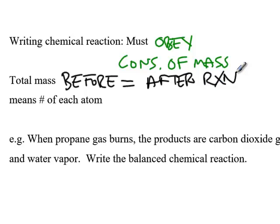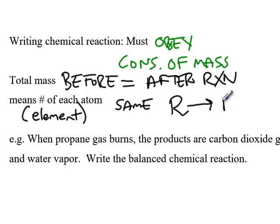And what that means, if you're looking at it microscopically, is the number of each atom, which is for each element, that number has to be the same on the reactant side and on the product side.